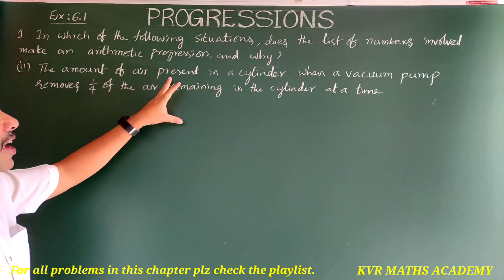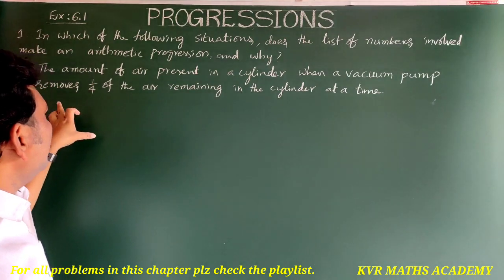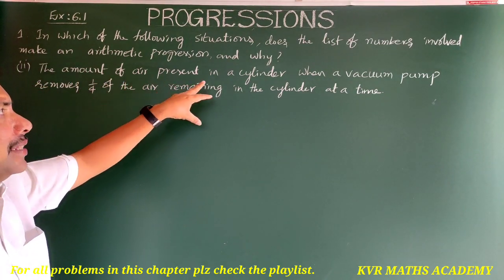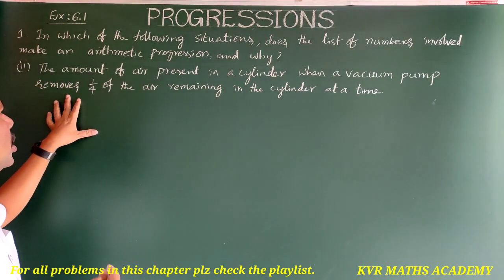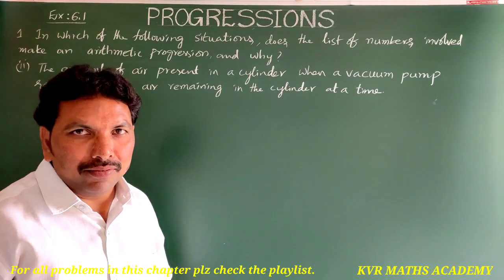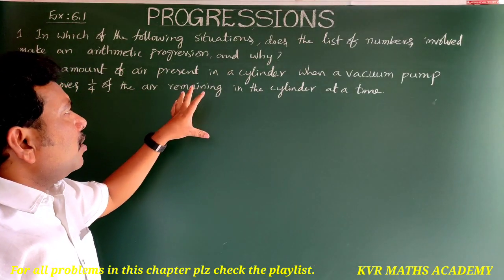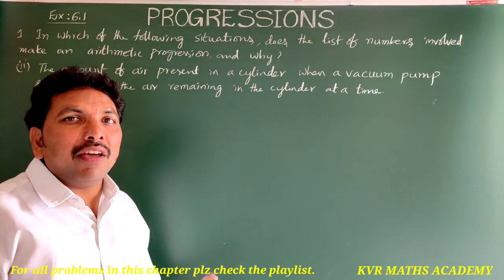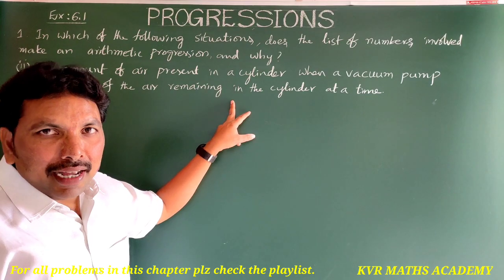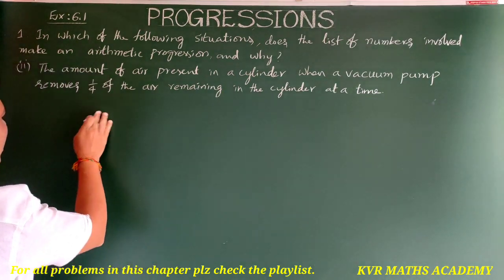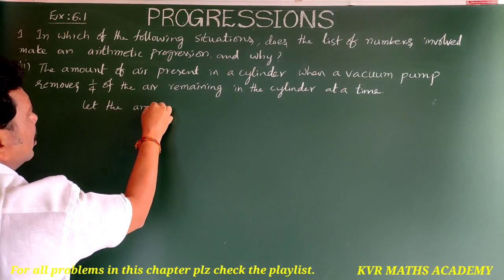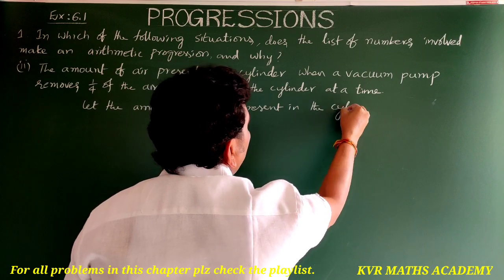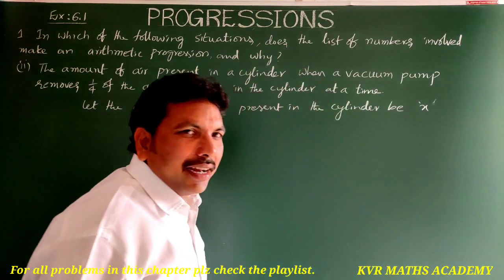Part (ii): The amount of air present in a cylinder when a vacuum pump removes one-fourth of the air remaining in the cylinder at a time. Let the amount of air present in the cylinder be x.